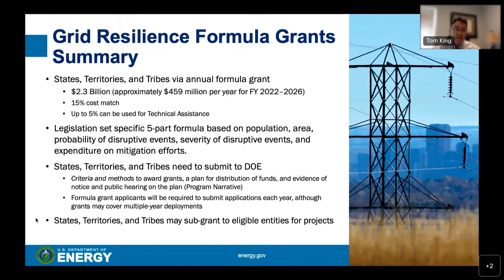States, tribes, and territories will need to submit to DOE an application that focuses on criterion methods to award grants, a plan for distribution of funds, and evidence of notice and public hearing of the plan. That is within the program narrative, and Jay Hanna will be going through much more detail in the following recorded module.